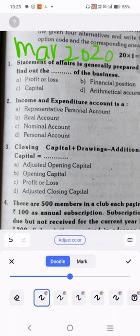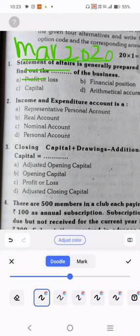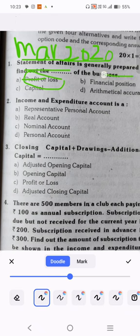In March 2020 MCQ: The statement of affairs is generally prepared to find out what happened. Profit or loss account will show your financial position and the business or net worth.